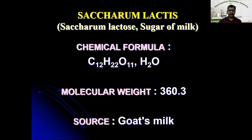Lactose is obtained from cow's milk because cow's milk is rich in lactose. Lactose or sugar of milk is a disaccharide which contains one unit of beta glucose and one unit of galactose.